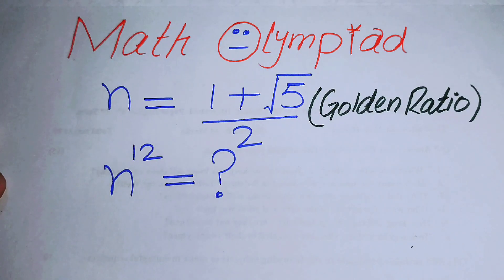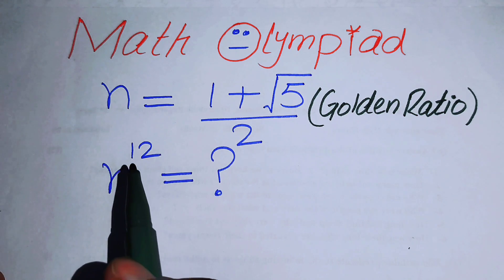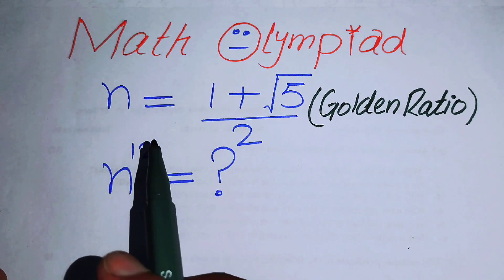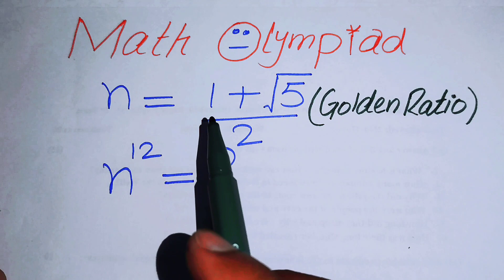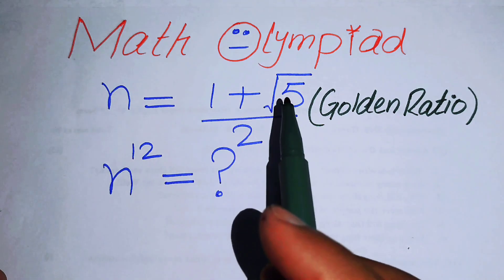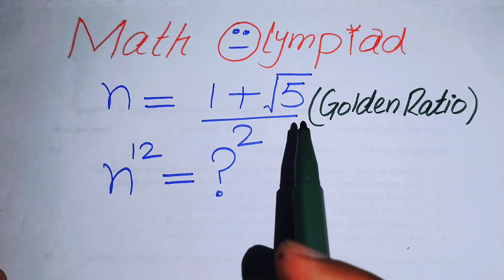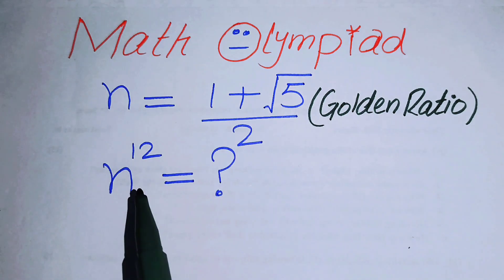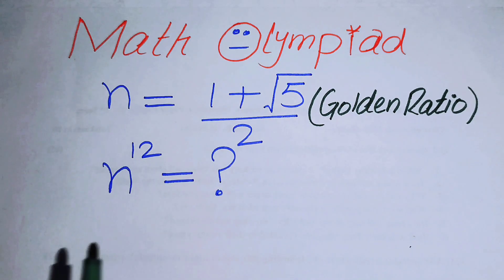Hello everyone, welcome back to the Map of Mathematics. In this video we are going to solve a nice algebra problem — the golden ratio problem. Here n is equal to 1 plus square root 5 over 2. This ratio is known as the golden ratio, and we will solve this problem for the value of n to the power of 12.